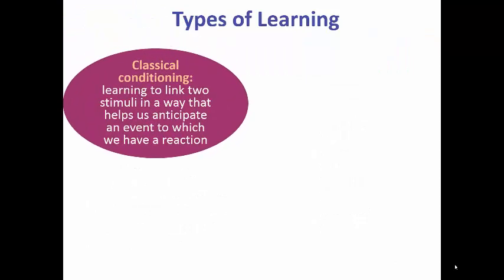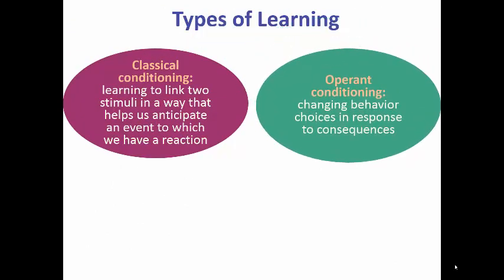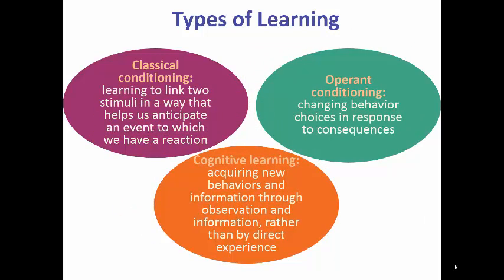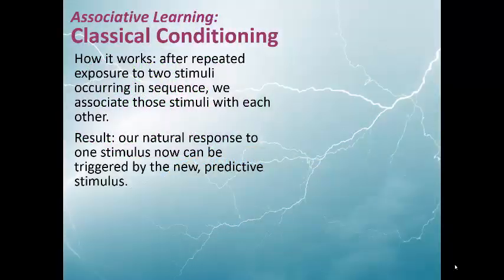There are three types of learning. The first is classical conditioning, in which we learn to link two stimuli in a way that helps us to anticipate an event and have a reaction. Operant conditioning is changing behavior choices in response to consequences — this is the behaviorism stuff we do with our kids and with dogs. And then cognitive learning is acquiring new behaviors and information through observation rather than by direct experience, like reading things or observing things.